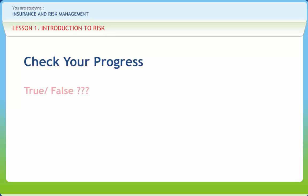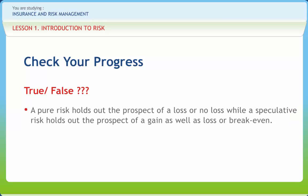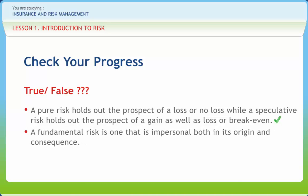Now let us check if we have understood the various concepts discussed in this lesson clearly. A pure risk holds out the prospect of a loss or no loss while a speculative risk holds out the prospect of a gain as well as loss or break-even. Right or wrong? Right. A fundamental risk is one that is impersonal both in its origin and consequence. Right or wrong? Right.